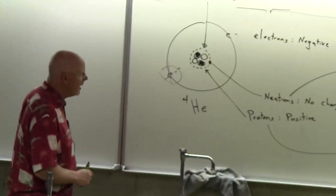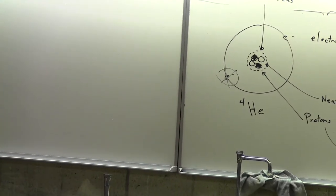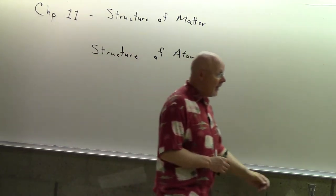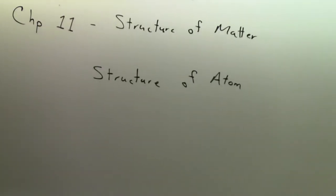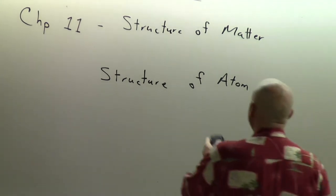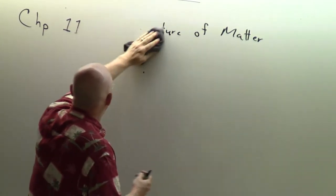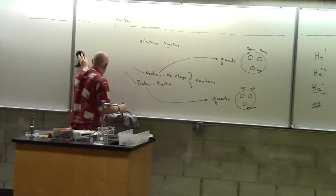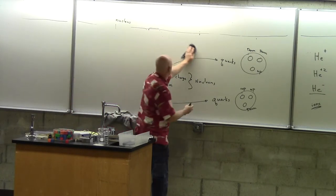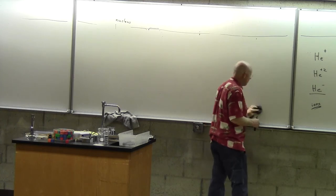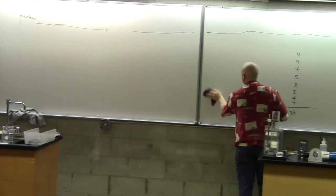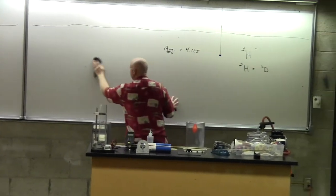I hope you got from this beginning part of the chapter — remember these next three or four chapters are the structure of matter — this is the structure of an atom. At this point I think I've gotten across what an atom looks like and how to use the periodic table. You could now tell me what an atom of gold would look like and what an atom of aluminum would look like.